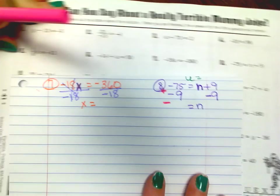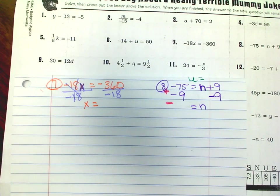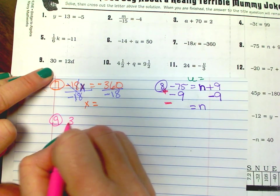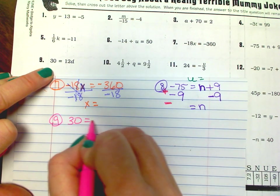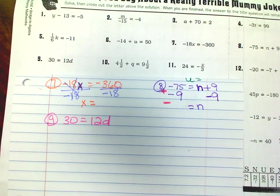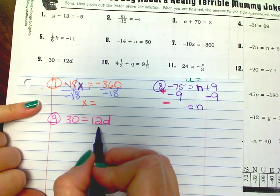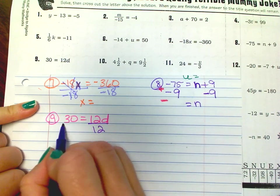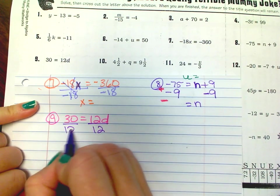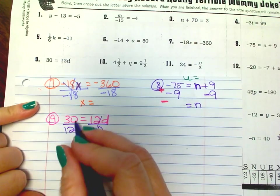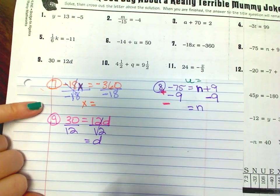Number 9. 30 equals 12d. Find your variable and ask what is it doing to the number — it's multiplying. Do the opposite. It cancels out, so 30 divided by 12 and you'll have your answer.